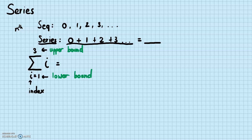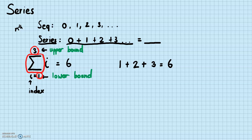The index starts at the lower bound and goes up by one each time. So for the summation where i goes from one to three of i: i starts at one, then two, then three — we stop at three because that's the upper bound. The summation notation tells us to add up all these terms, so one plus two plus three equals six.